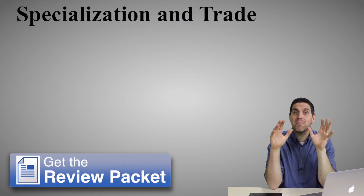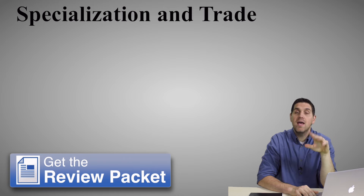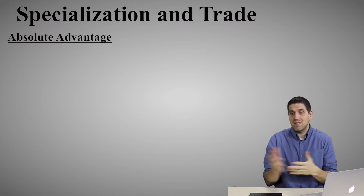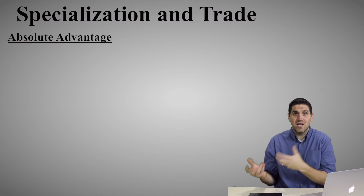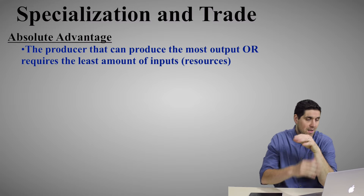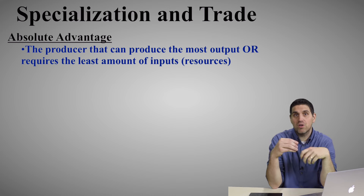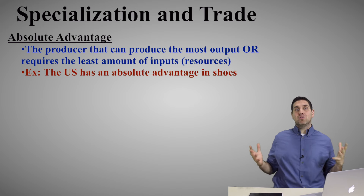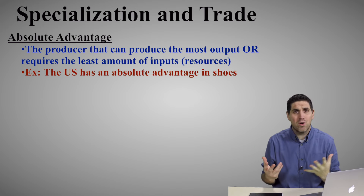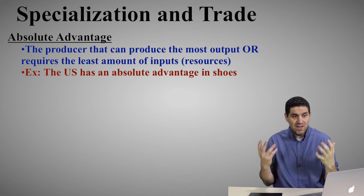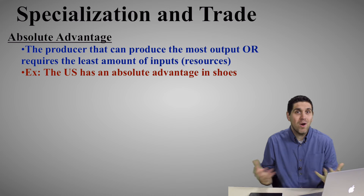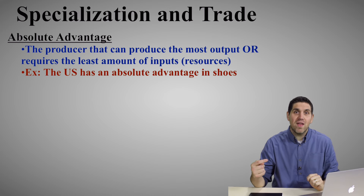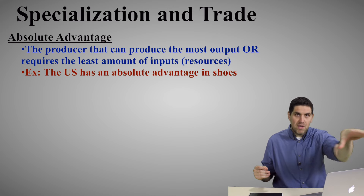Now I'm going to slow down — this is something a lot trickier. It's called specialization and trade, the idea of comparative advantage. It starts off with the idea of absolute advantage: some people can produce more output, or use fewer resources to produce the same output as someone else. The United States probably has an absolute advantage in the production of shoes — we could produce a boatload of shoes. But we don't, because we specialize in other things and let other countries specialize in shoes.